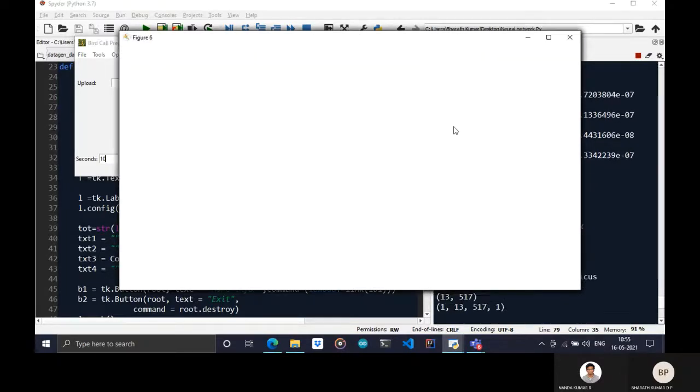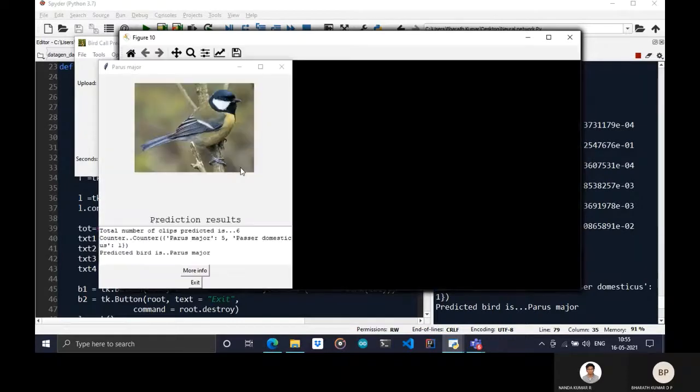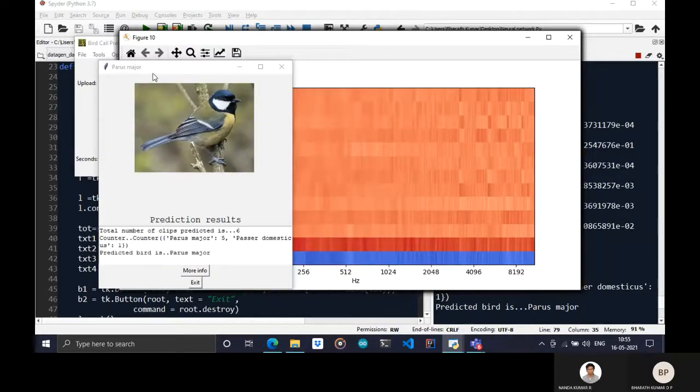The recording will be played. Again, MFCCs are shown for each clip, and based on MFCCs, it will make the prediction. Parus major is the predicted bird. As you can see, six clips are used, and five are predicted as Parus major. Again, MFCCs are shown for each clip.